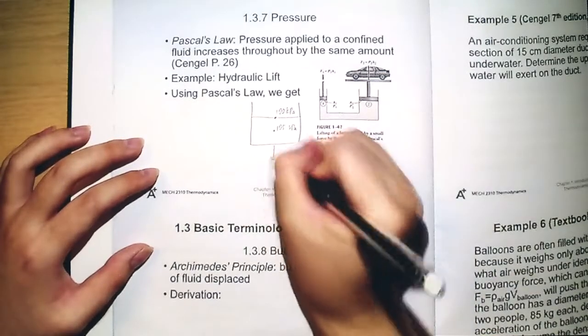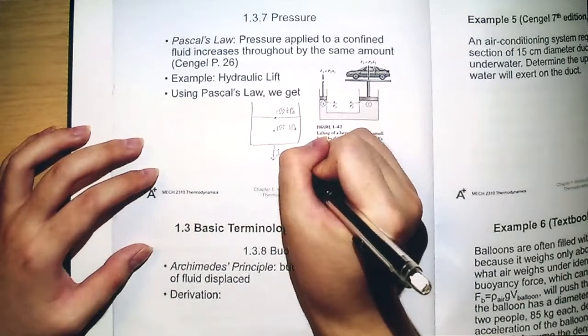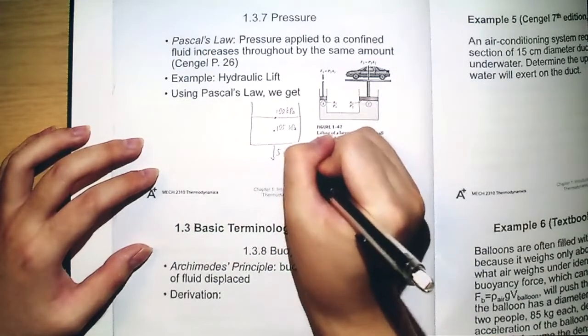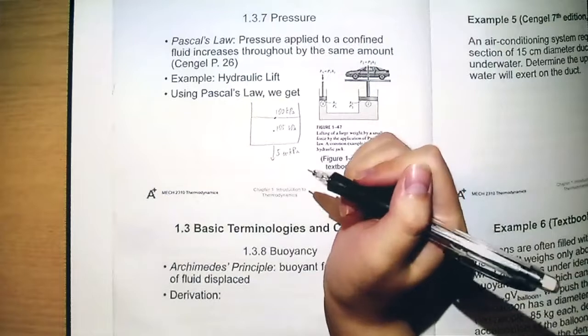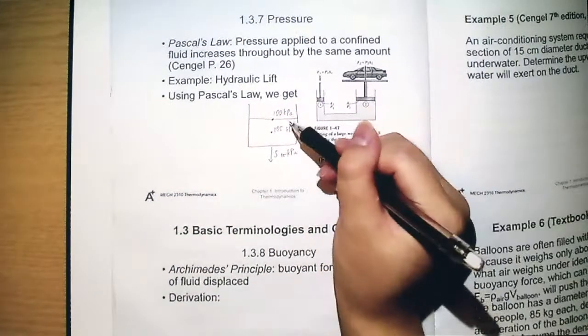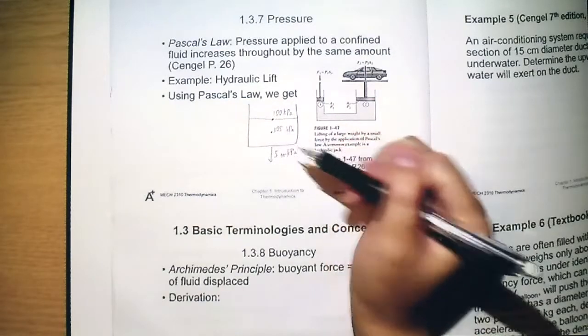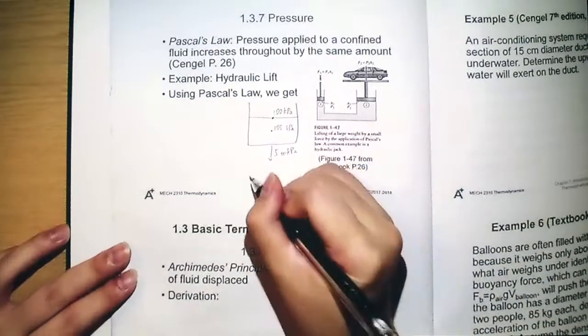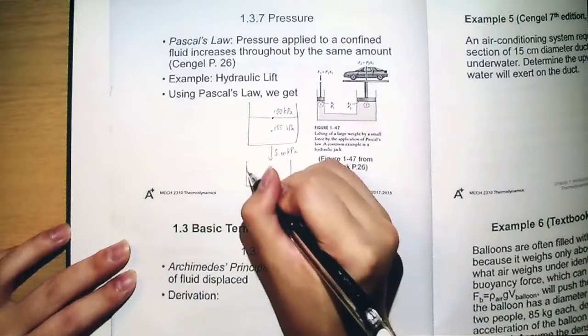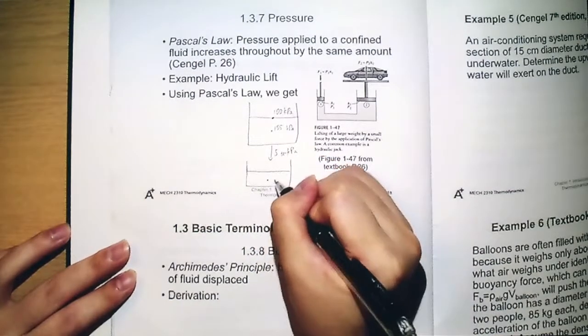After you add five units of pressure, five kilopascal for example, we add five kilopascal to this 105 kilopascal. Not only at this point it will become 110 kilopascal,